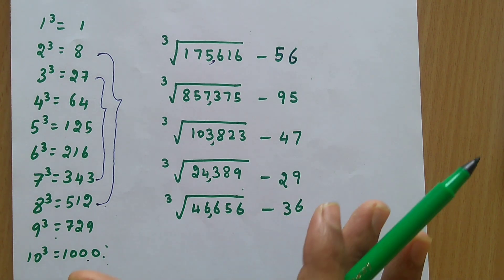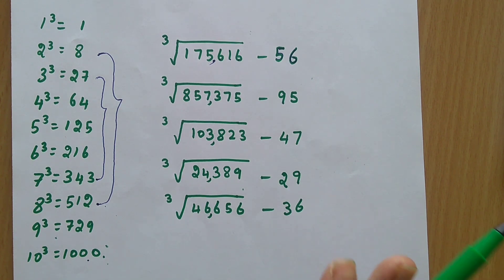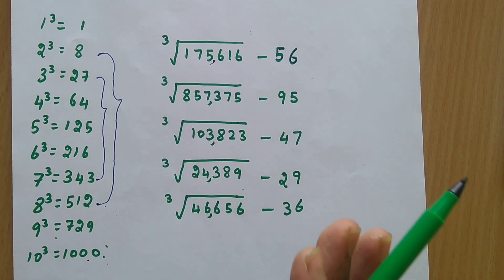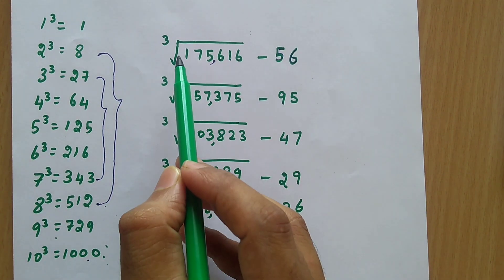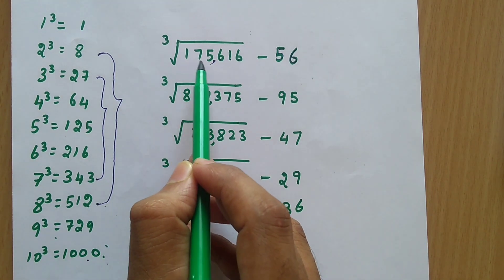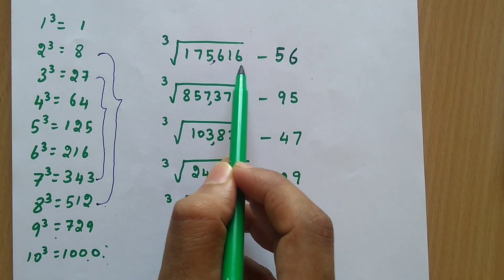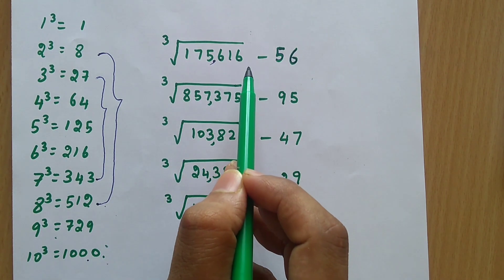Here I have given some examples along with their cube root answers, which will give you a clear picture of how to find the cube root. The first question is: cube root of 175616. It is a 6-digit number.